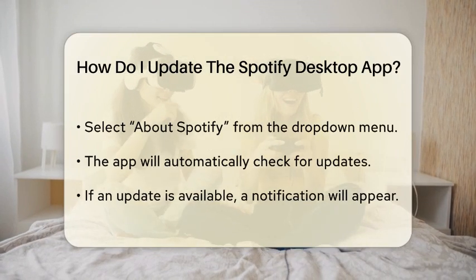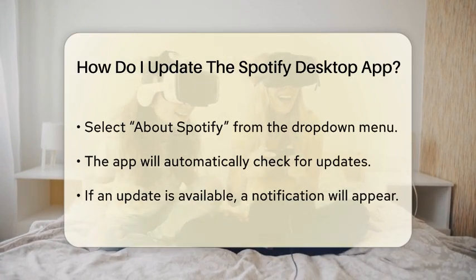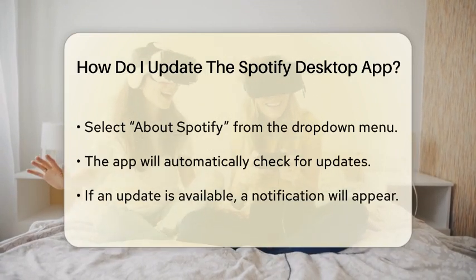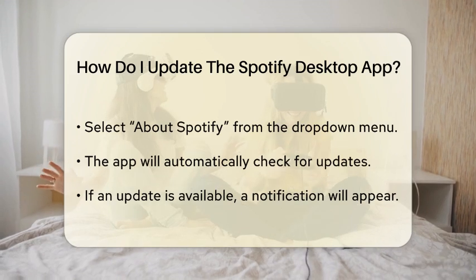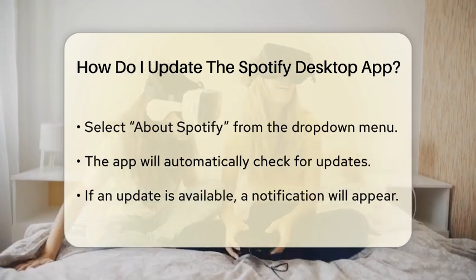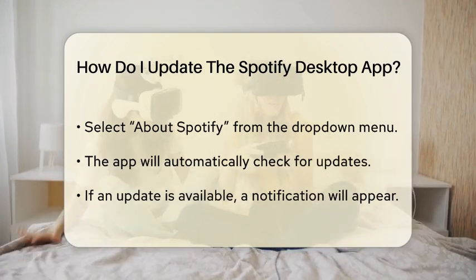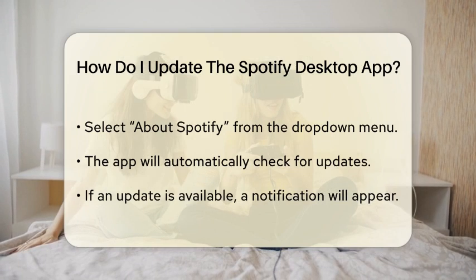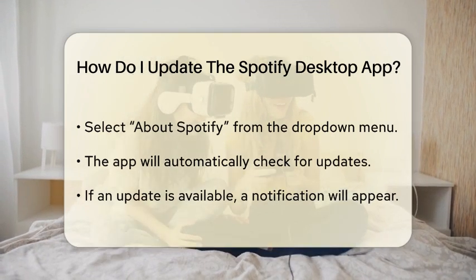Next, navigate to the Help option in the menu. Click on it, and a drop-down will appear. From this drop-down, select About Spotify. This action will prompt the application to check for updates automatically.